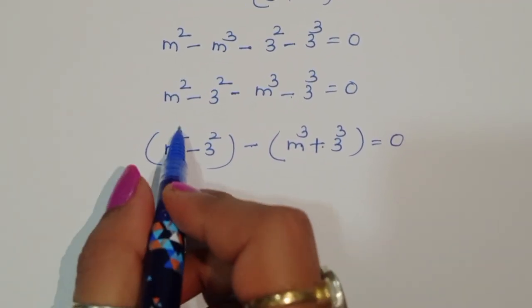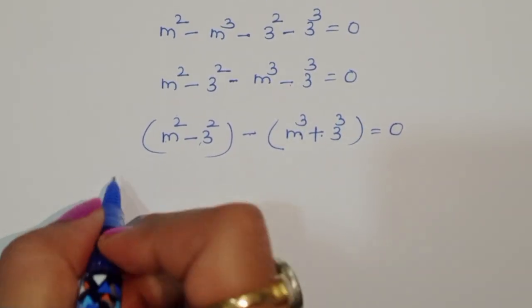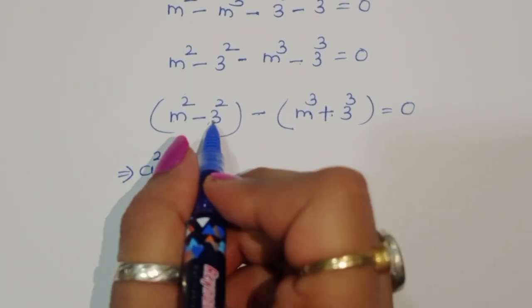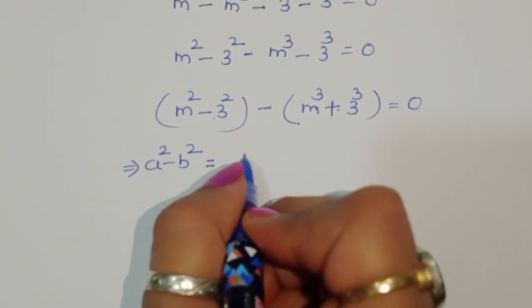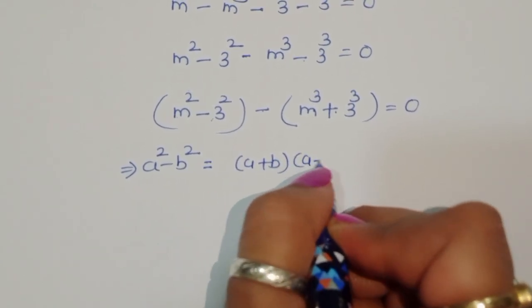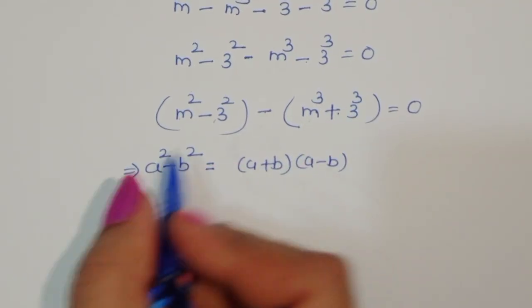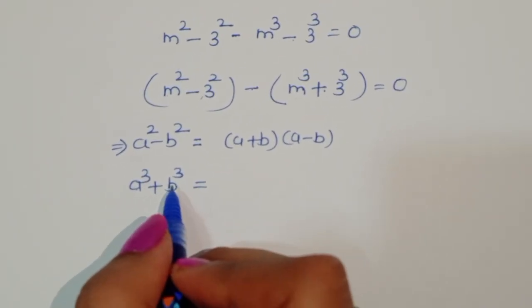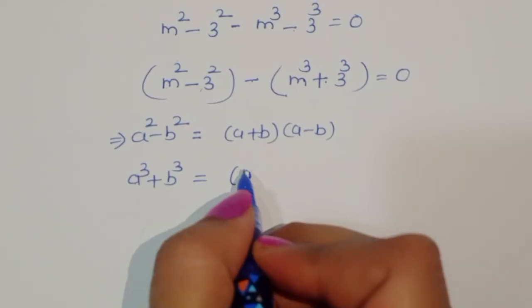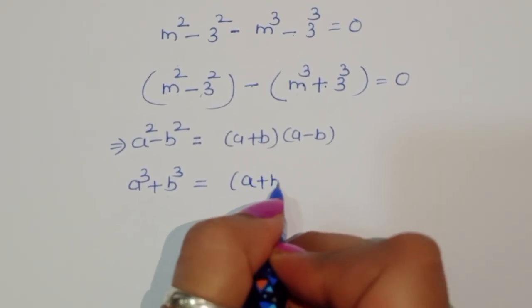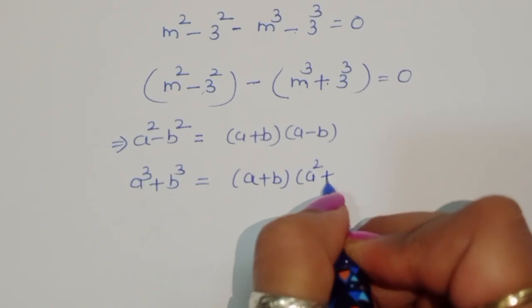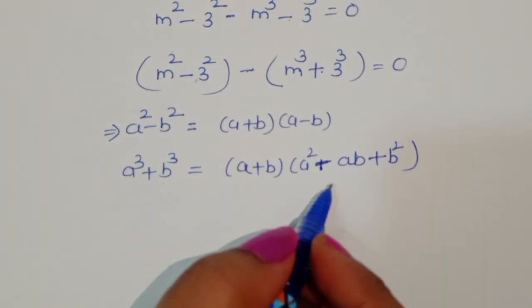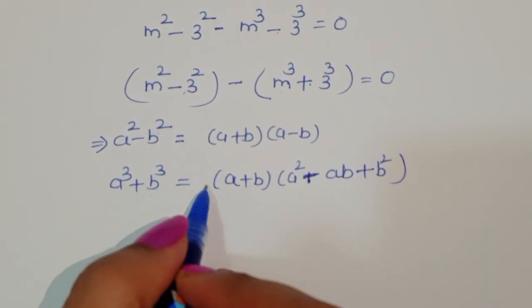Now we have to use two formulas. First: a squared minus b squared equals (a plus b)(a minus b). Second: a cubed plus b cubed equals (a plus b)(a squared minus ab plus b squared). We will apply these two formulas to our expression.